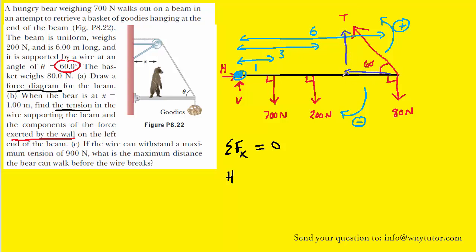We just want the x component for the current analysis here, and that would be the tension times the cosine of 60. Because it's pointing to the left, we have to make sure we make that negative. So it's minus tension cosine 60.